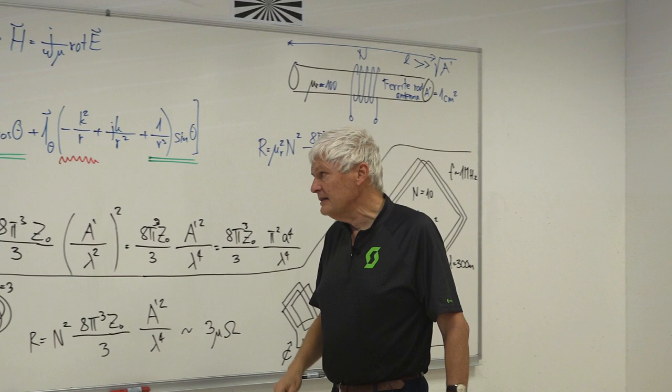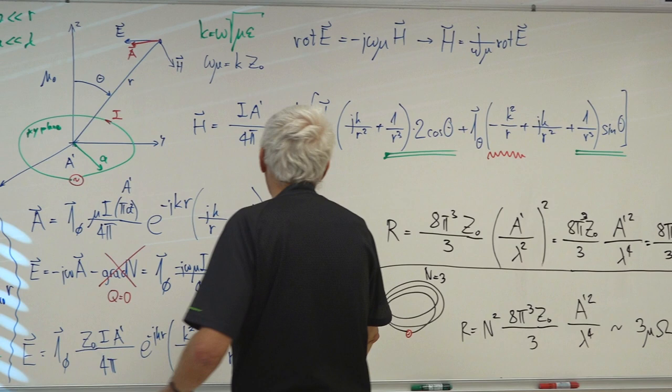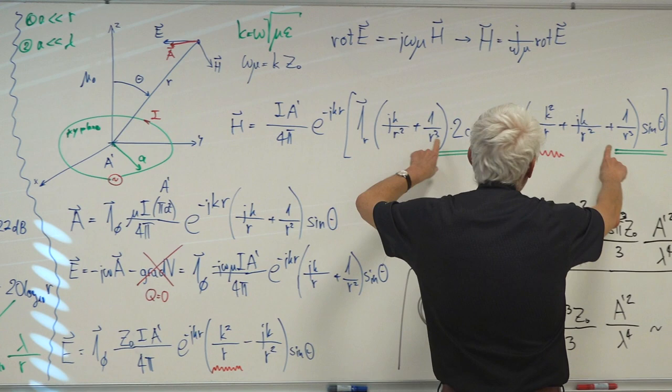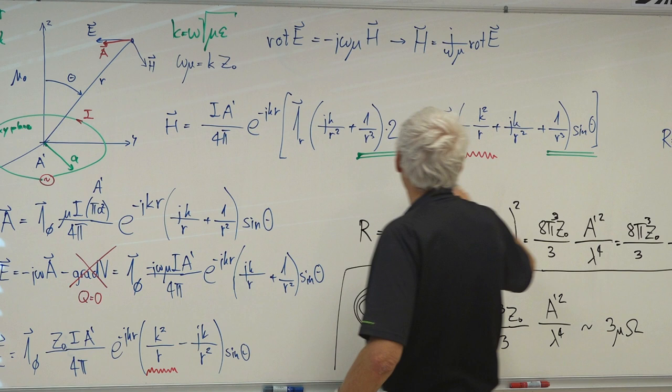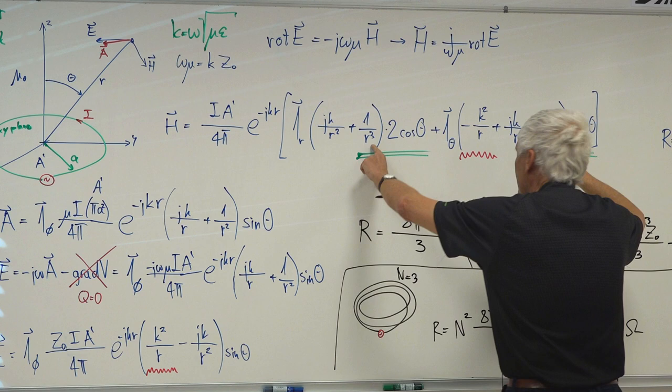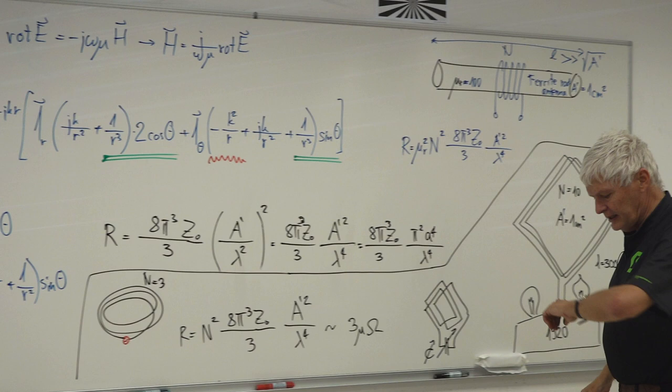The advantage of these loop antennas is that their reactive near field contains only a magnetic field. The electric field only has 1/r² in the denominator, while the magnetic field has 1/r³ — so the magnetic field rises to very high levels in close proximity to the antenna.